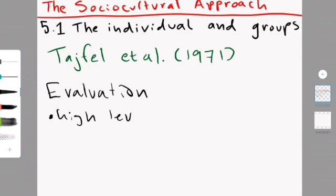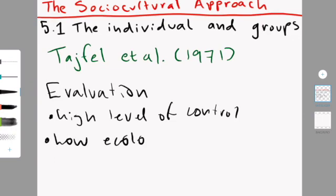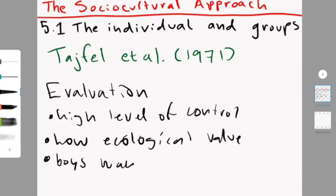An evaluation of the study is that it has a high level of control but a low level of ecological validity because the tasks that they were asked to do are not very natural and wouldn't happen in a real-life situation. I don't think there are very many 14-year-old boys that go and rate paintings and then divide themselves into groups and then rate each other.